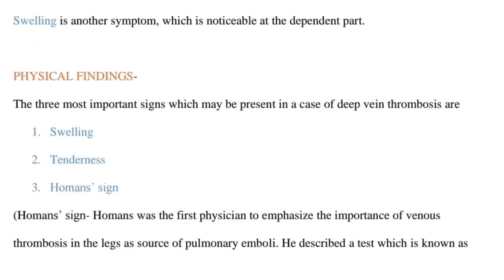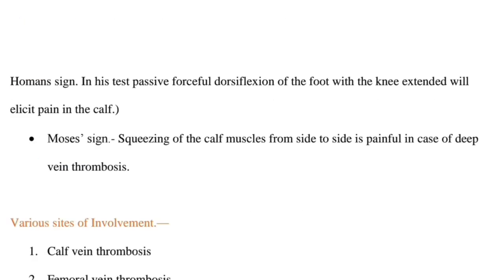Physical findings: the three most important signs present in a case of DVT are swelling, tenderness, and Homan's sign. Homan's was the first physician to emphasize the importance of venous thrombosis in the legs as a source of pulmonary emboli. He described a test known as Homan's sign, in which passive forceful dorsiflexion of the foot with the knee extended will elicit pain in the calf.